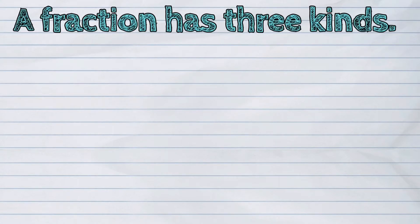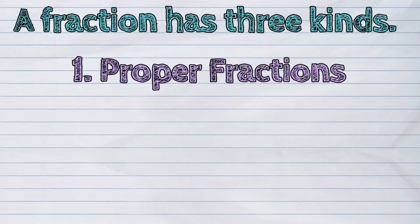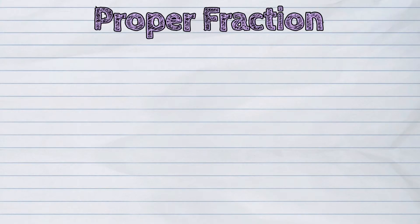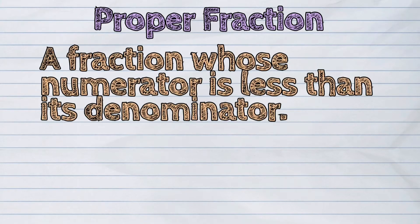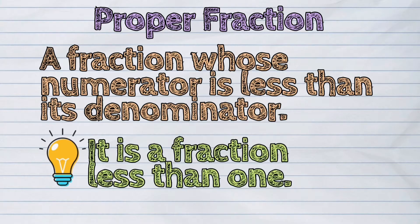A fraction has three kinds. The first one is the proper fraction. A proper fraction is a fraction whose numerator is less than its denominator. It is a fraction less than one.